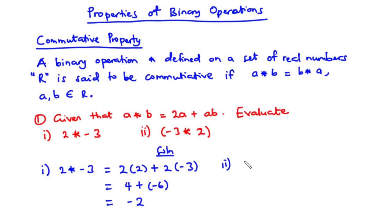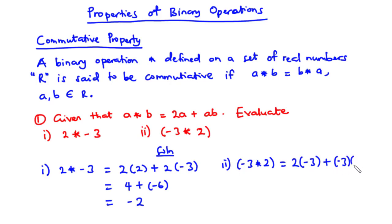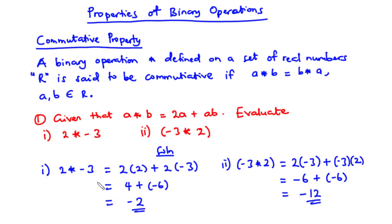Now let's solve for (II), that is negative 3 star 2. We are going to apply the same rule 2A plus AB. So our A is negative 3 and our B is 2. So we have 2 times negative 3 plus negative 3 times 2. 2 times negative 3 is negative 6, and negative 3 times 2 is negative 6. So negative 6 minus 6 is negative 12. So negative 3 star 2 is negative 12, and 2 star negative 3 is negative 2.